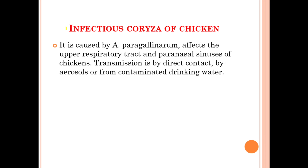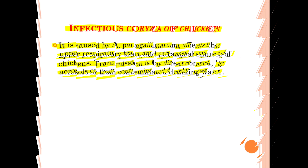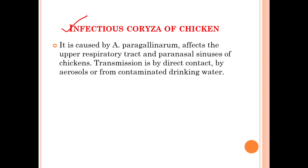Infectious coryza of chickens is caused by Avibacterium paragallinarum, affecting the upper respiratory tract and the paranasal sinuses of chickens. Transmission occurs by direct contact with infected birds, by aerosols, or from contaminated drinking water.